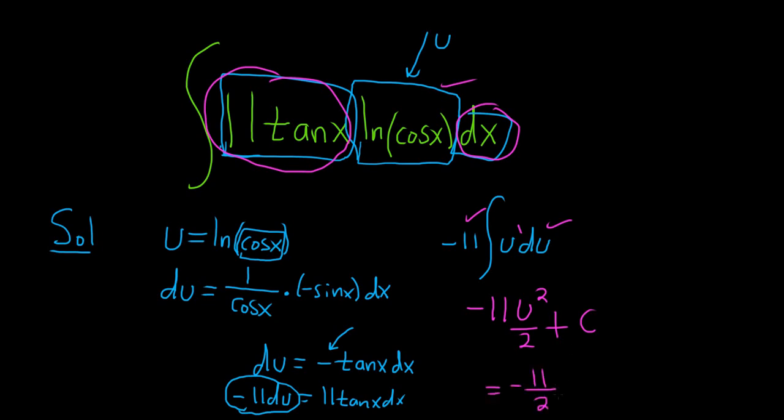So this is negative 11/2. And u was ln(cos x). Be really careful here. The whole thing is in parentheses. You really want to be careful when you write your answer down because you have to have the parentheses around the whole thing. You need that extra parentheses to indicate that the entire ln(cos x) is what's being squared.